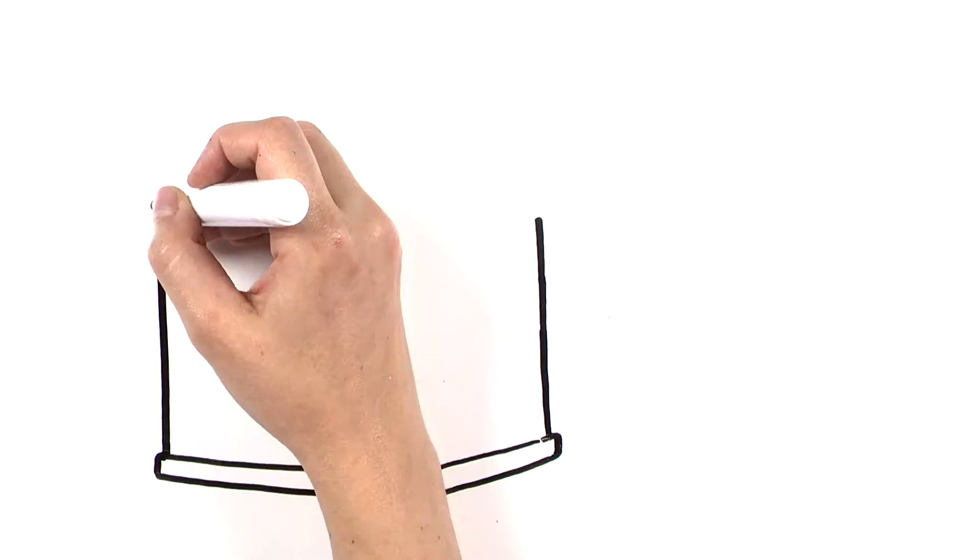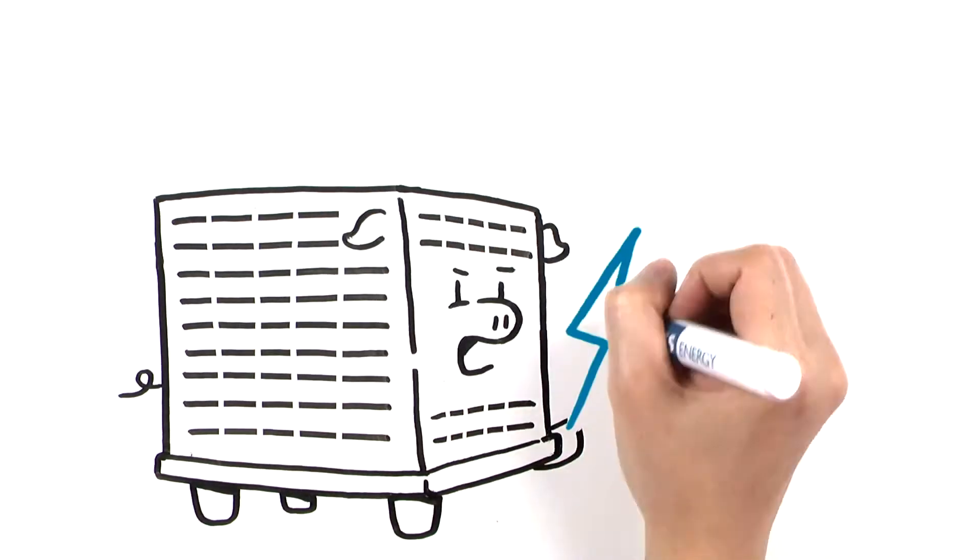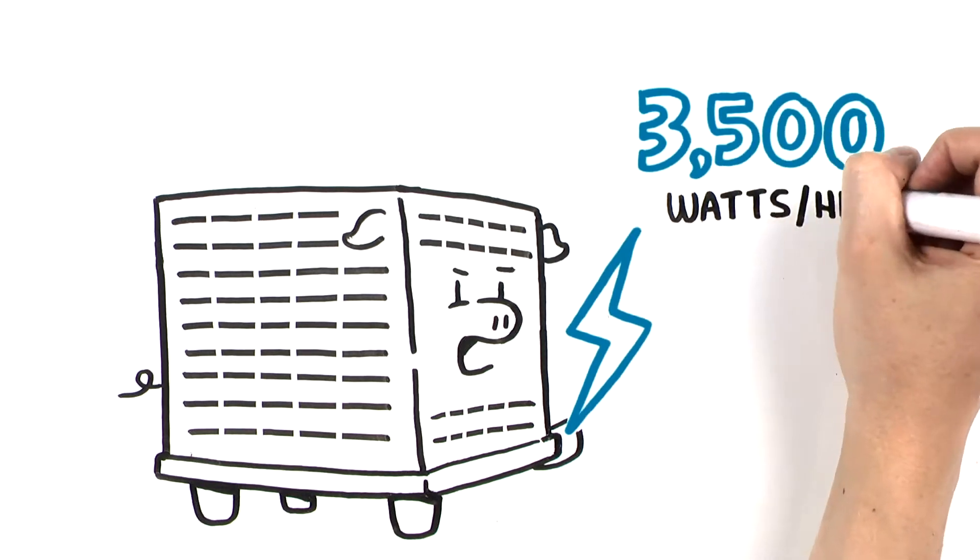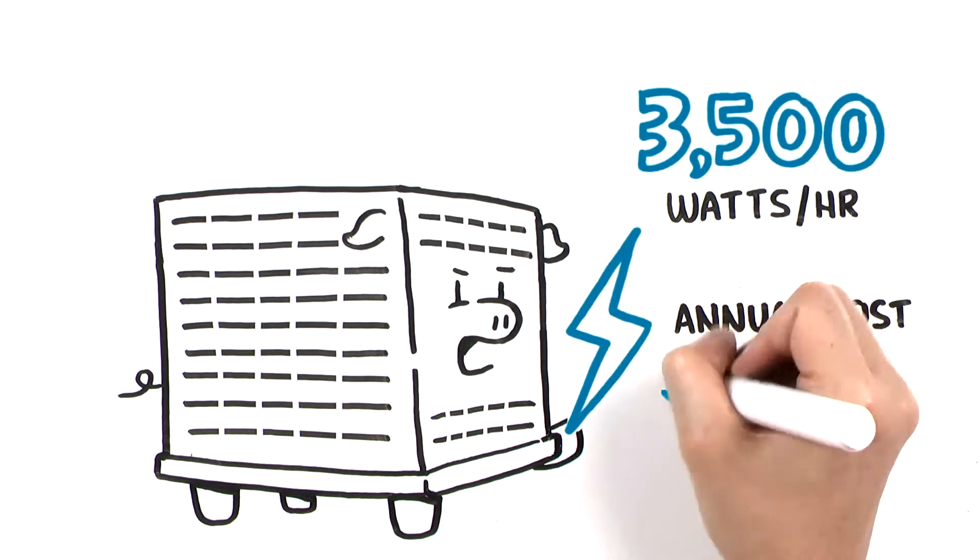Not surprisingly, your HVAC system is often the biggest energy drain, with air conditioners using up to 3,500 watts per hour for a whopping annual cost of $460.